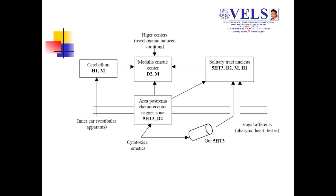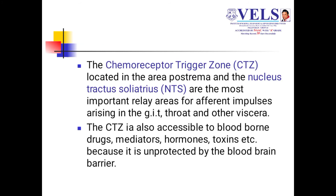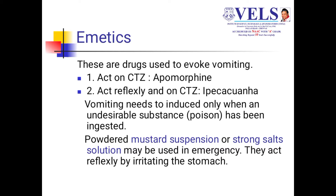Each receptor can be stimulated by different types of responses, and based on that we use anti-emetics or induce emesis. Vomiting occurs due to stimulation of centers situated in the medulla oblongata. The chemoreceptor trigger zone is located in the area postrema, and the nucleus tractus solitarius (NTS) is also an important relay area for afferent impulses arising in the gut, throat, or other visceral organs. The CTZ is also responsible for drugs susceptible to the blood-brain barrier, mediators, hormones, and toxins, all of which can produce vomiting.